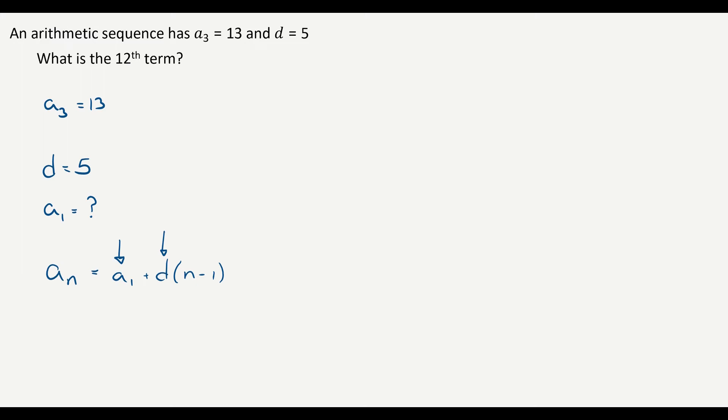Well, what information does that give us? We know that the third term is equal to the first term plus the common difference, which is five, times n minus one. Well, what is n in this case? It's three, because I'm on my third term. So I just created this formula, where 13 equals a sub one plus five times two. So 13 equals a sub one plus 10, or a sub one equals three. So I just found what I need, I have a sub one, and I have the d, the common difference. So now I can write the rule: a sub n is equal to three plus five times n minus one.